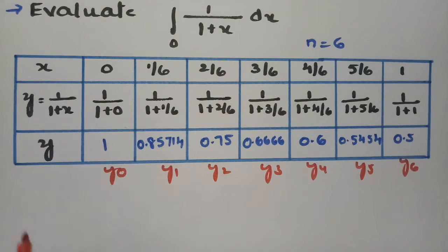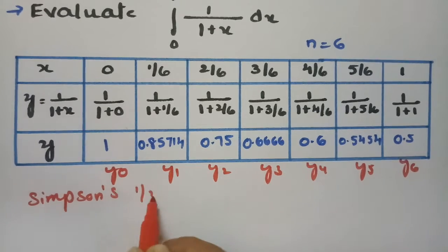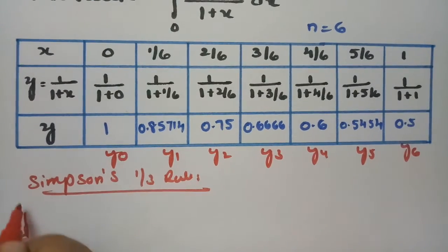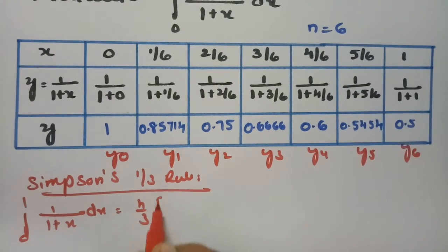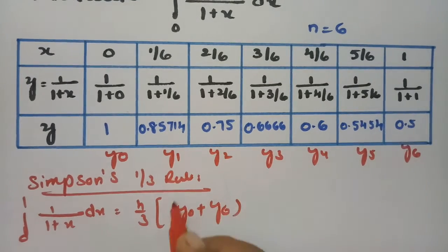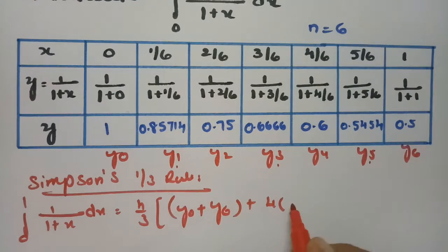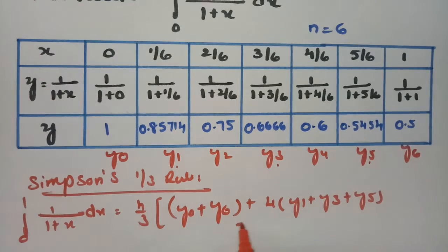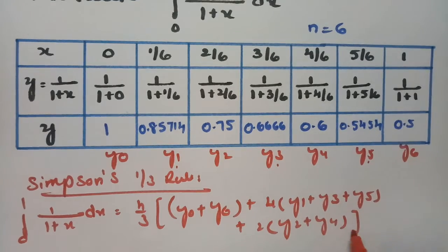I am using Simpson's 1/3 rule here. The formula is: integral from 0 to 1 of 1/(1+x) dx equals h/3 times of (y0 + y6) + 4 times the odd values y1, y3, y5, plus 2 times the even values y2 and y4.